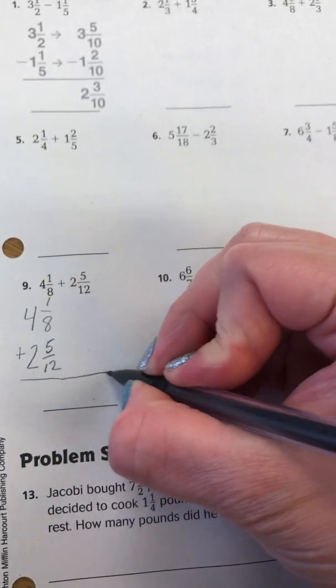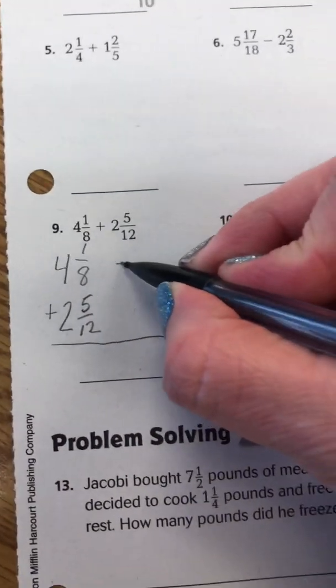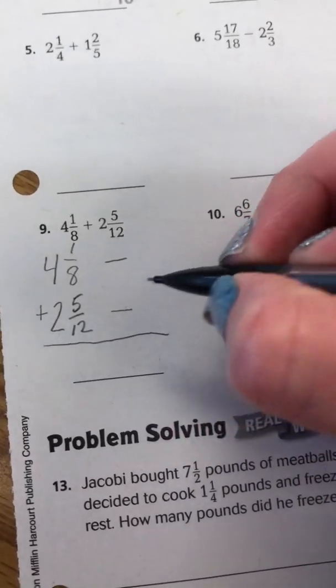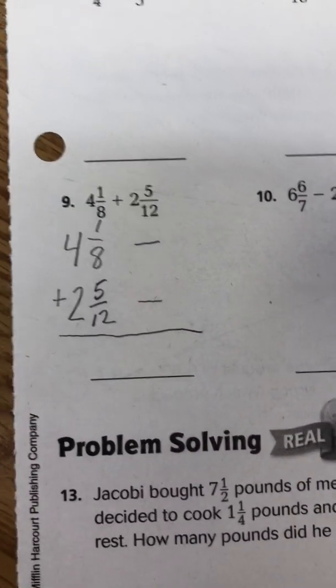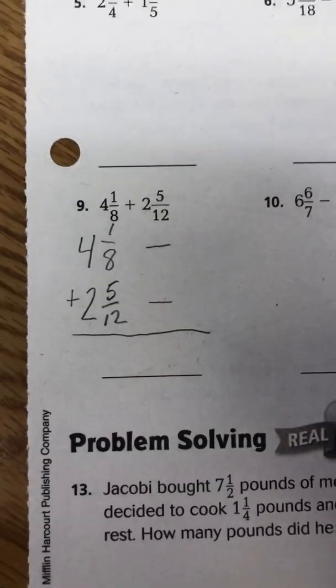We are going to want to find a common denominator for 8 and 12. Because remember, you cannot add or subtract fractions unless they have a common denominator. So one way you can do this is list the multiples of 8 and 12.